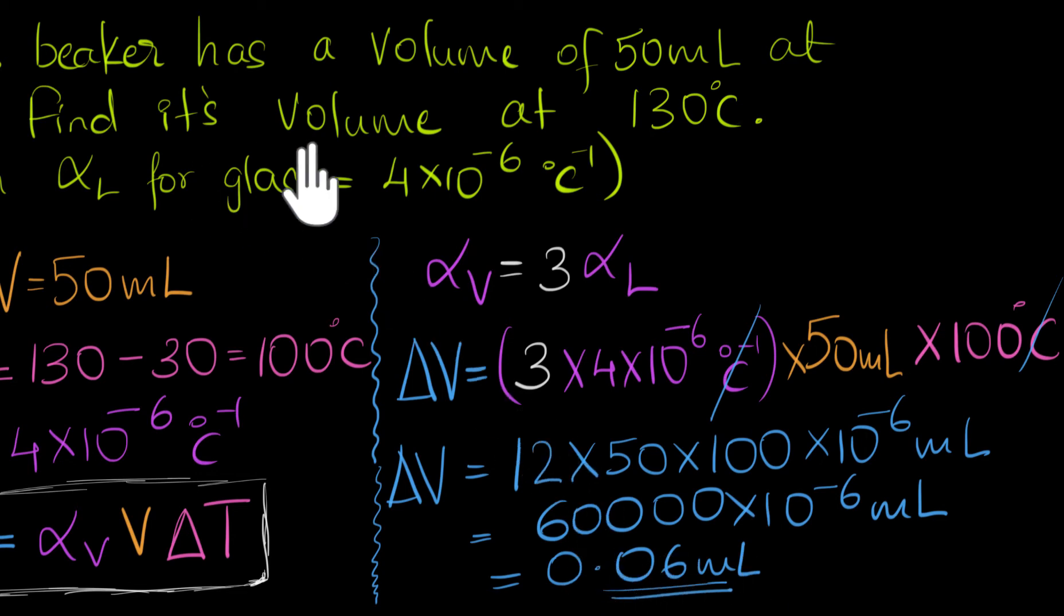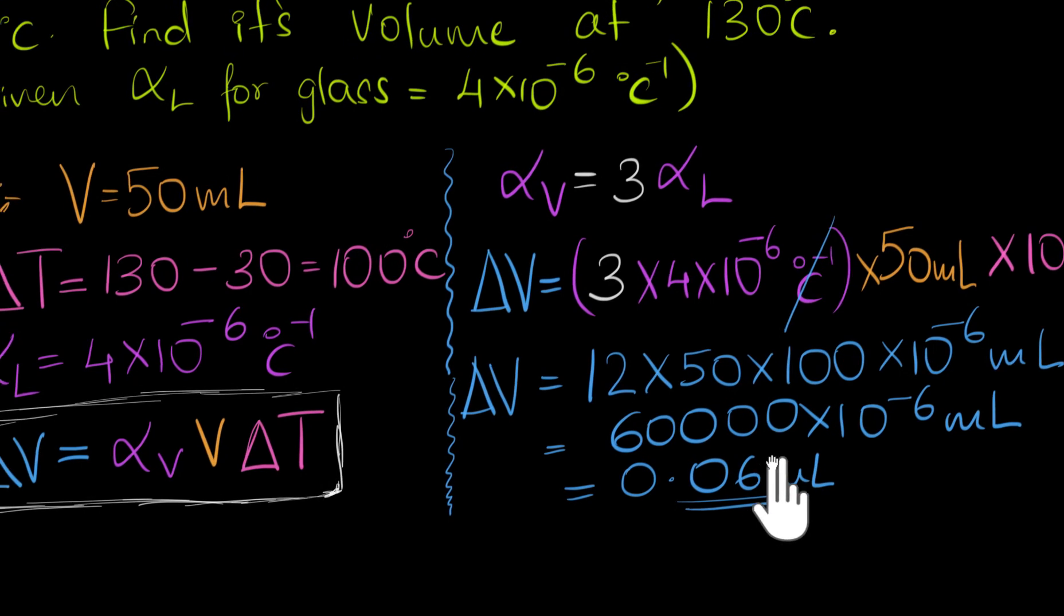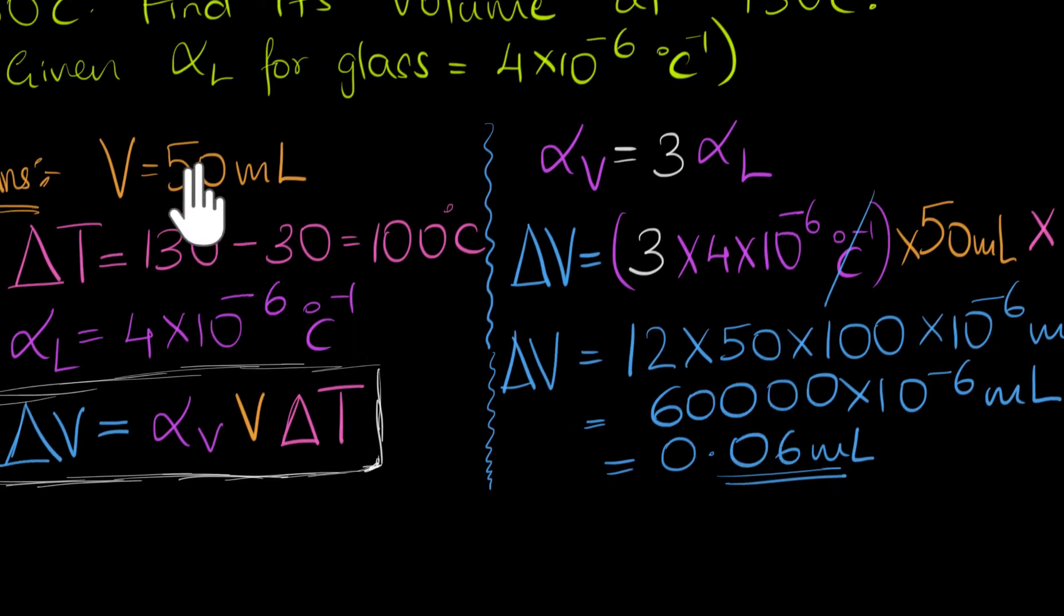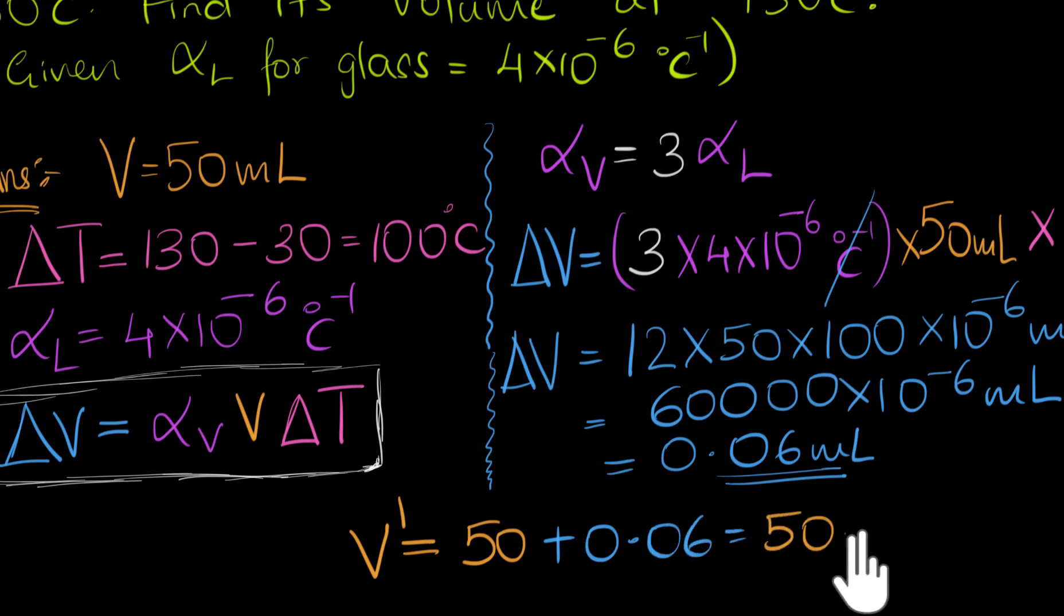But we need to find the final volume. Well we can do that. Since we know what the initial volume was, the initial volume was 50. Final volume would be just the initial volume, 50, plus the change. So it was 50, it increased by 0.06, so the new volume would be just 50.06 ml.